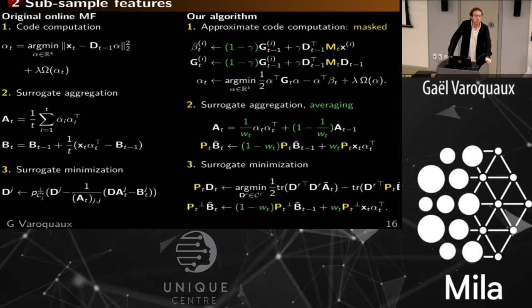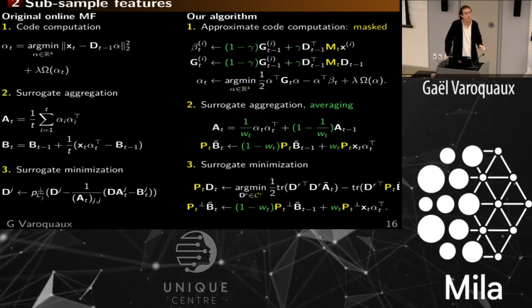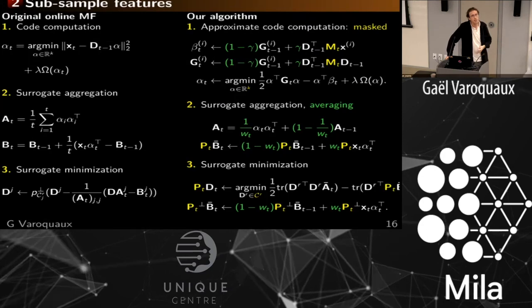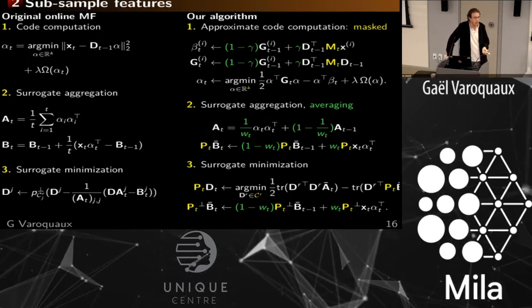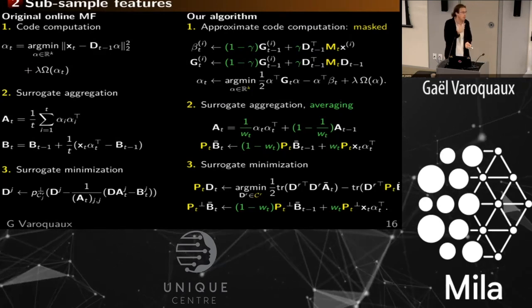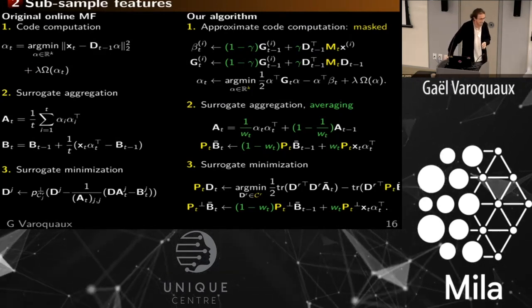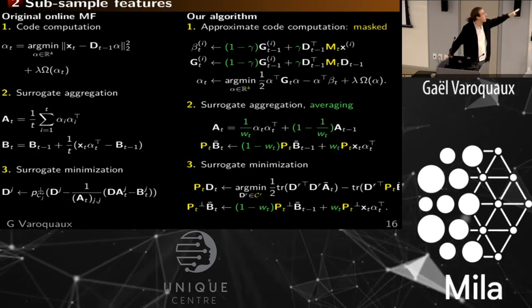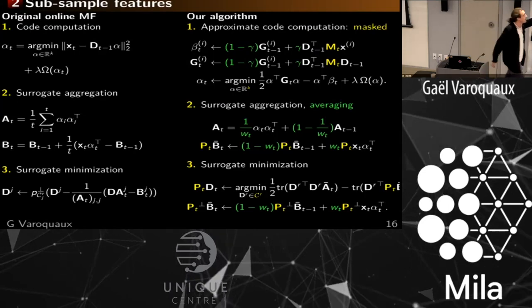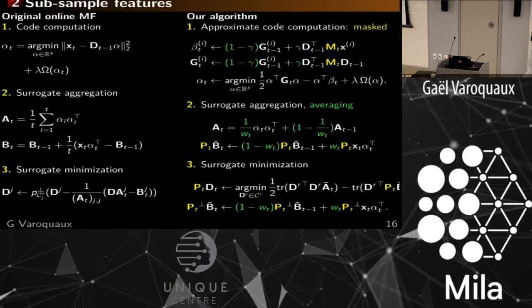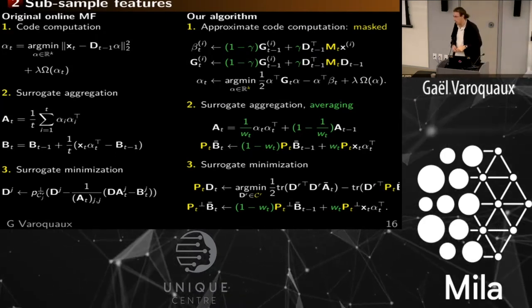In the proofs — which are horrible — we use martingale techniques that are apparently quite common in RL, because you need to account for your past. The key point is that those green averaging factors take into account the past, and taking into account the past is what makes us better than gradient descent — it's what gives us a good surrogate function.